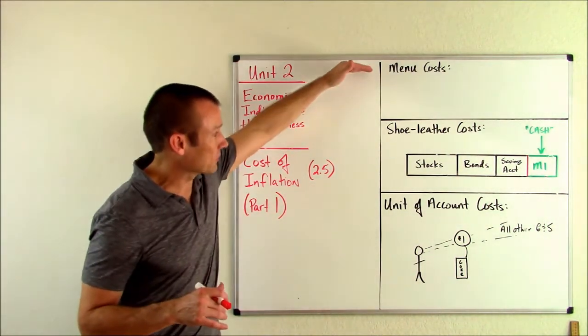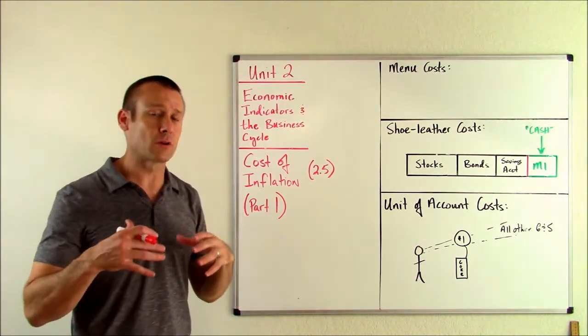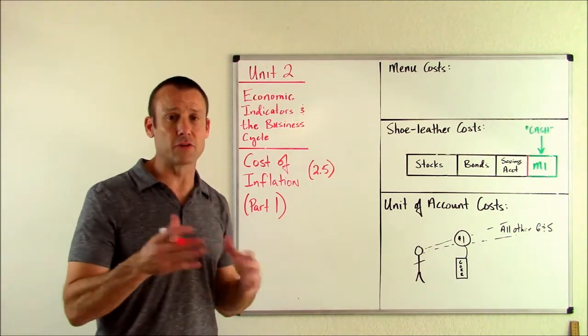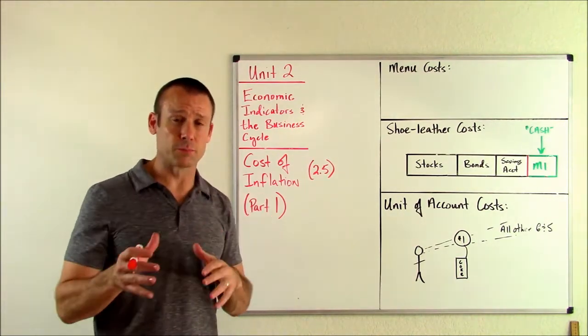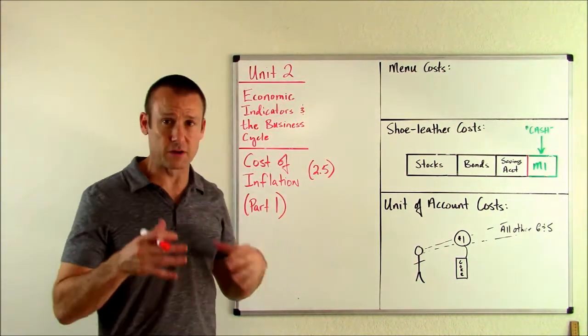This video is focused on the three major costs of inflation. In the part two video, we're going to be talking about the cost of unanticipated inflation on different groups of people, such as lenders and borrowers, and employers and employees. But for this video, here's my major cost of inflation I want to get through.